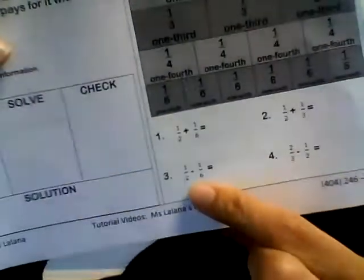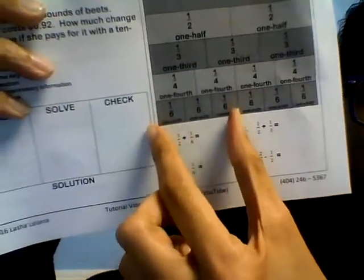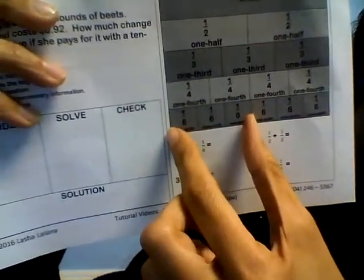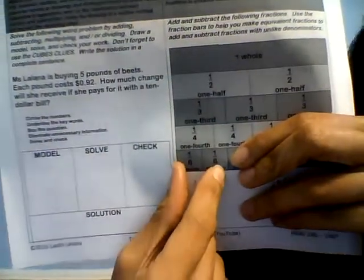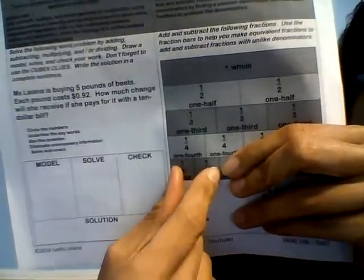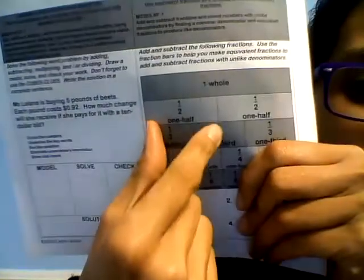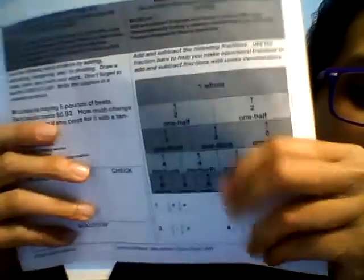Number three is one half minus one sixth. Where's one half? One half is right there, and one sixth is right there. We can change one half to three sixths. One half is equal to three sixths. And if we take away one sixth from three sixths, what's left? Two sixths right there. Is two sixths equivalent to anything else? One third. So one half equals three sixths; take off one sixth, you're left with two sixths, which is the same thing as one third.